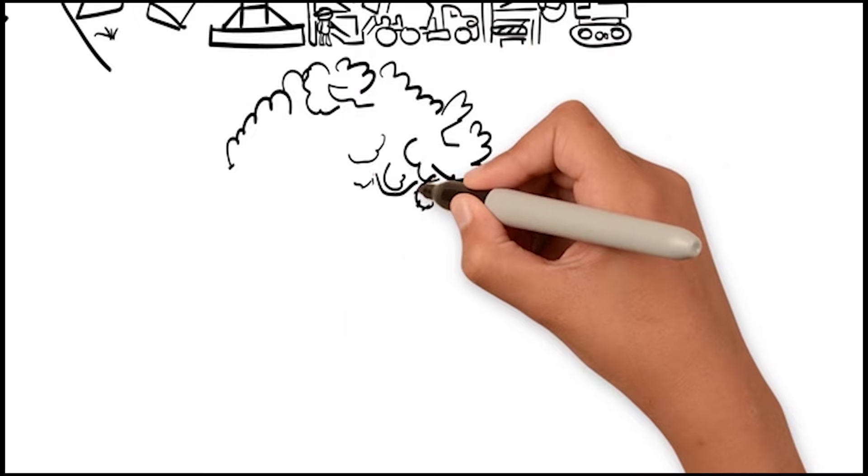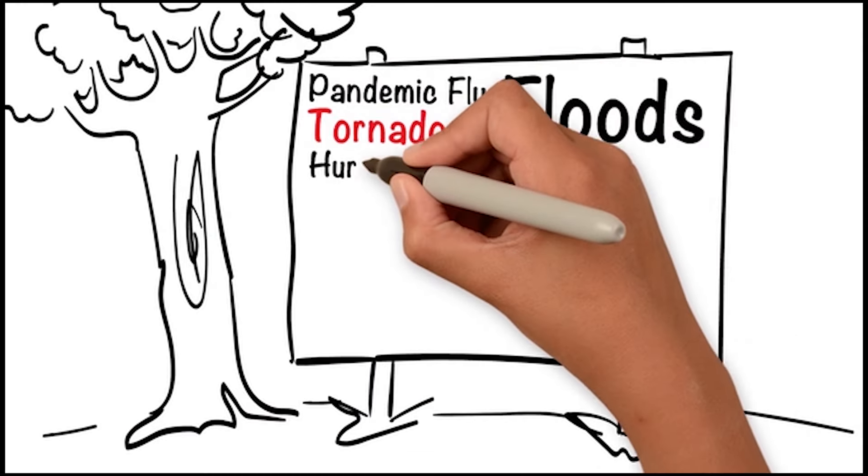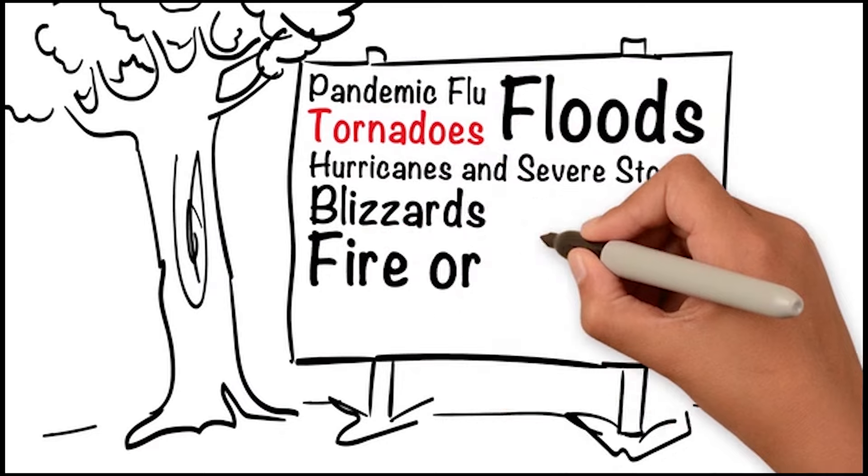Natural emergencies might include pandemic flu, tornadoes, floods, hurricanes and severe storms, blizzards, and fire or wildfire.